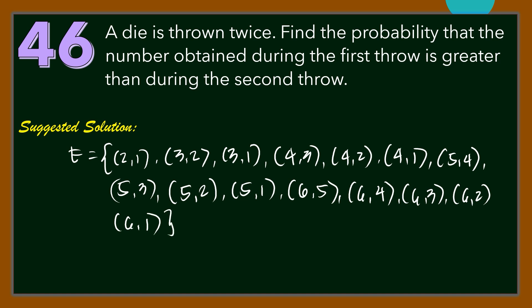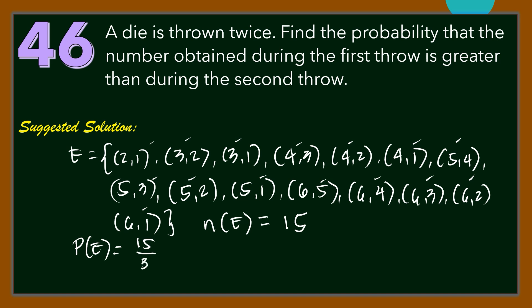This means that the number of elements in the event, N of E, is equal to 15. Then the probability that the first throw is greater than the second throw is equal to 15 over 36, simplified as 5 over 12.